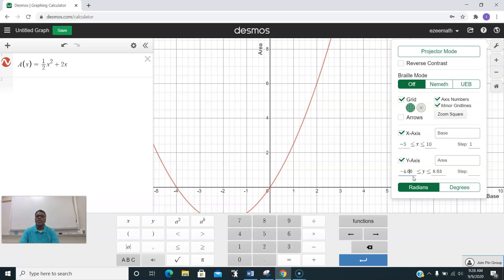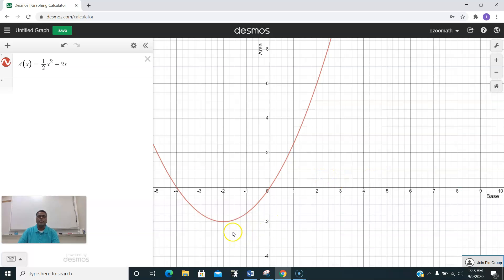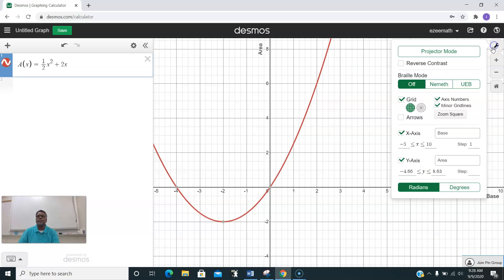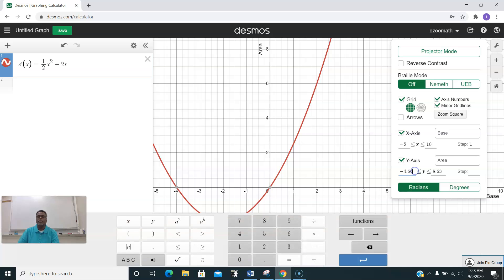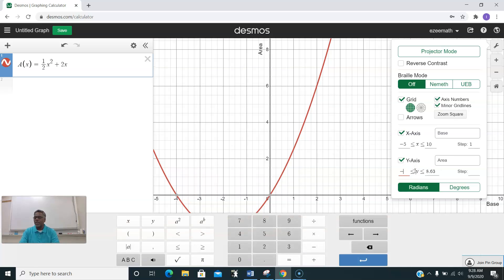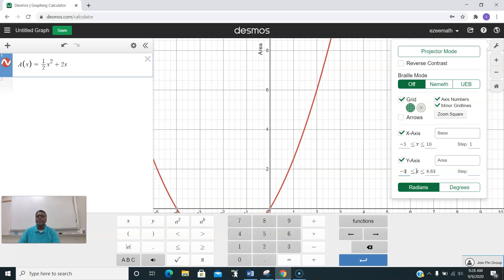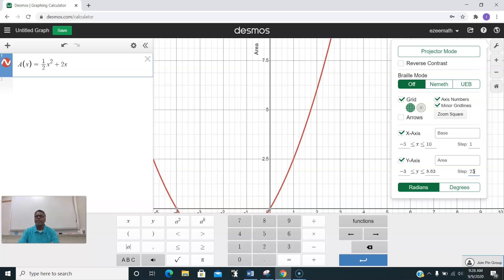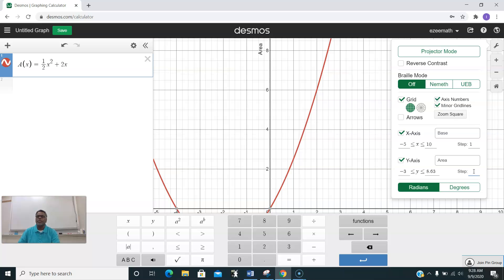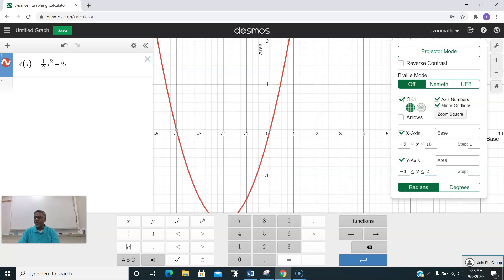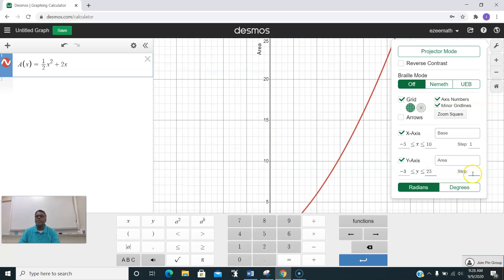For convenience, the vertex is at negative 2, 2, so I'll just go down a little bit. Let me take negative 3 and y value maximum something like 20 or 25. Y max is 25 with steps of 5.